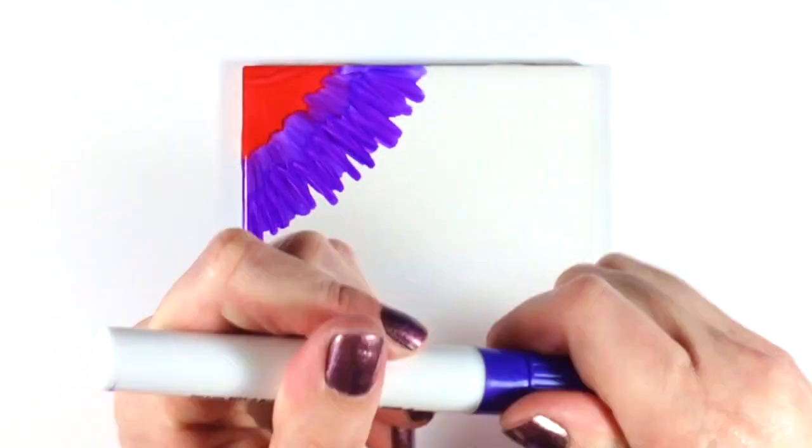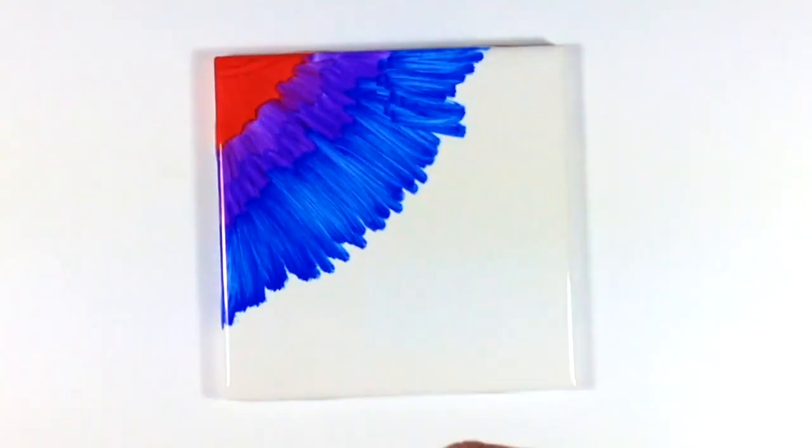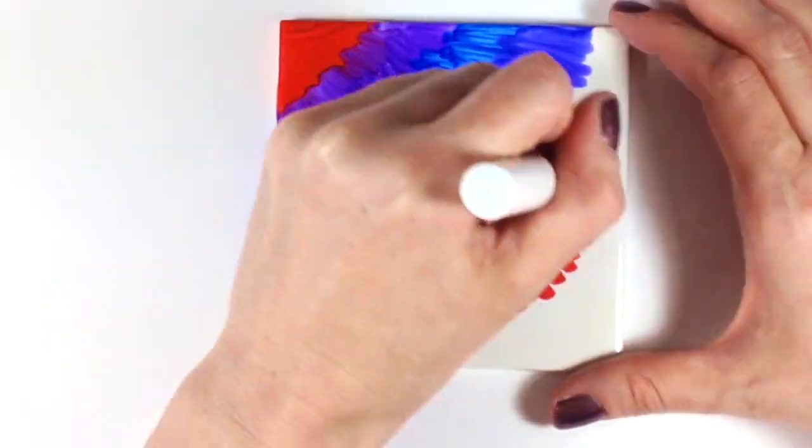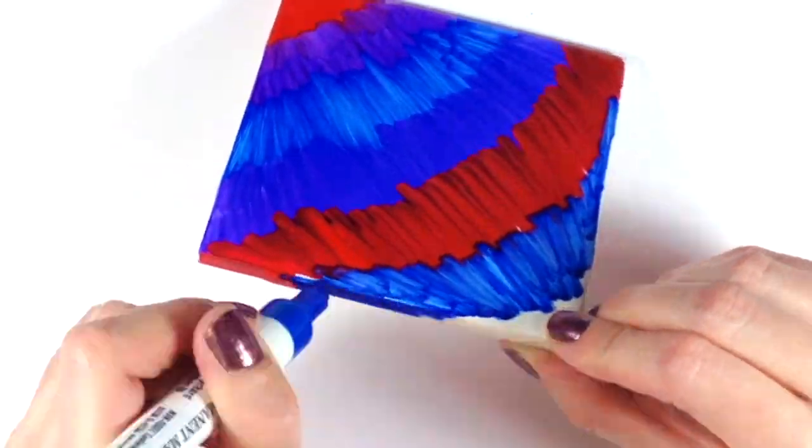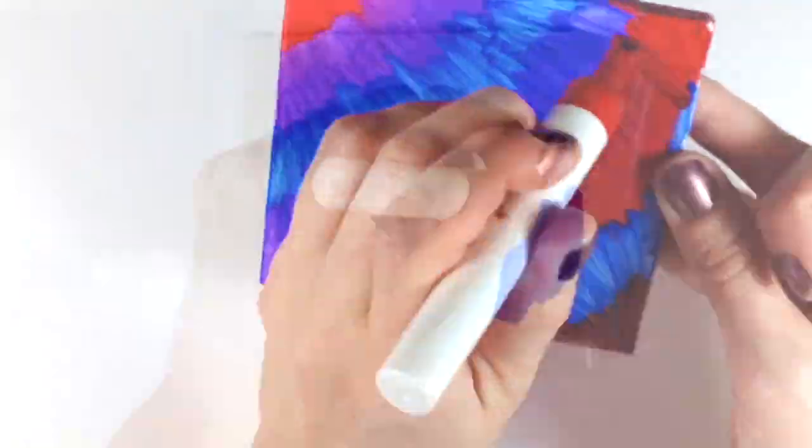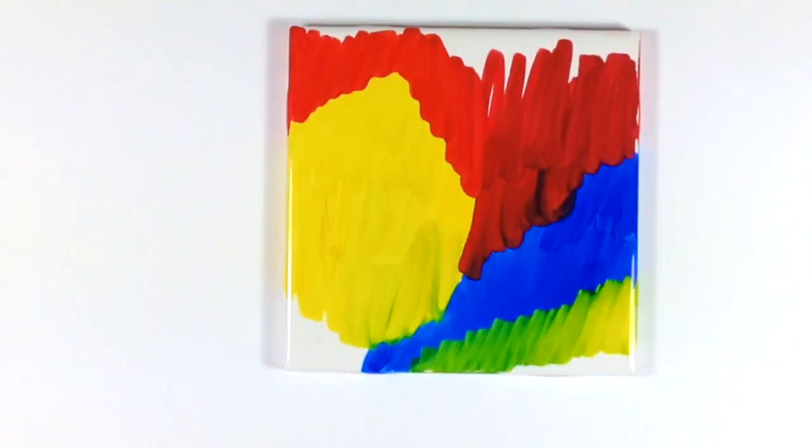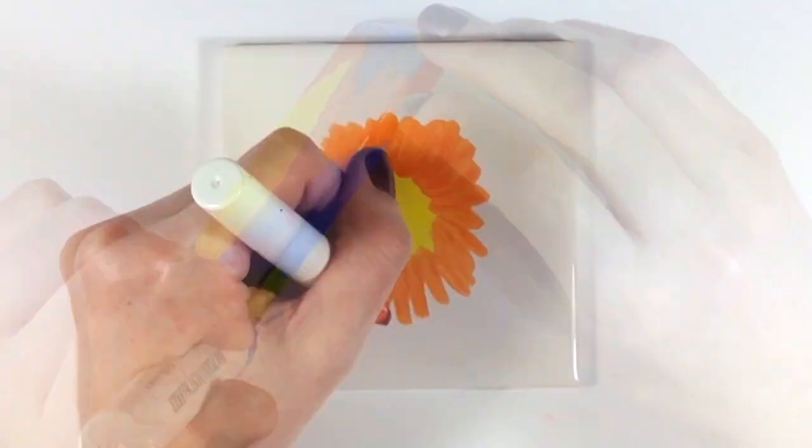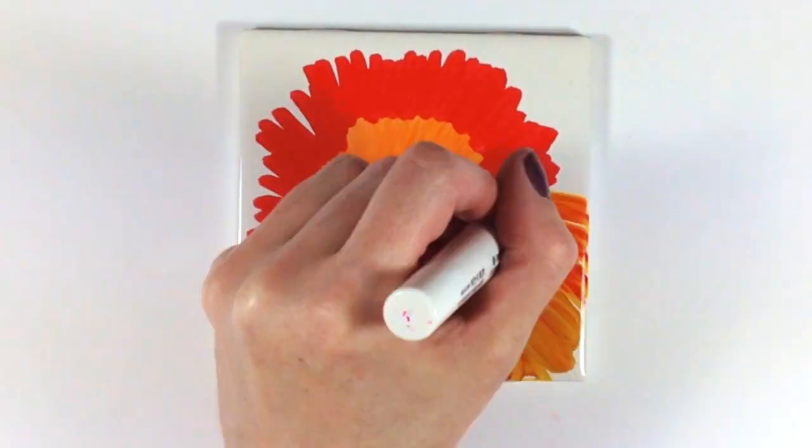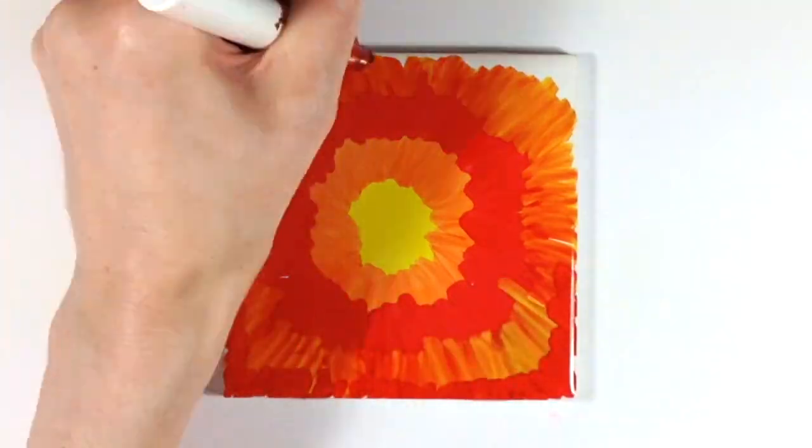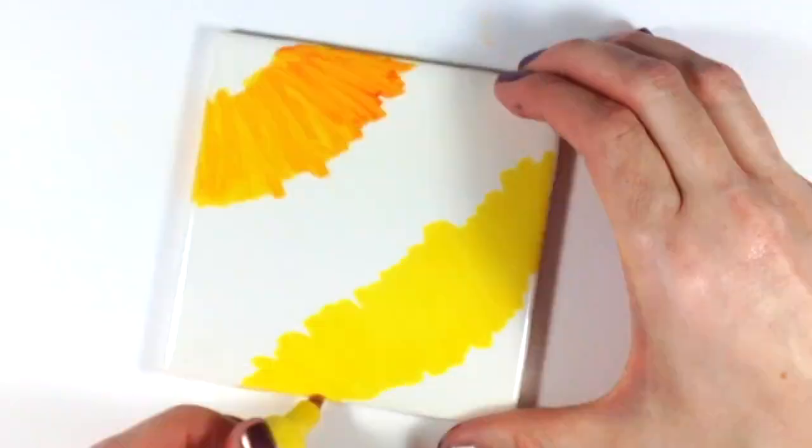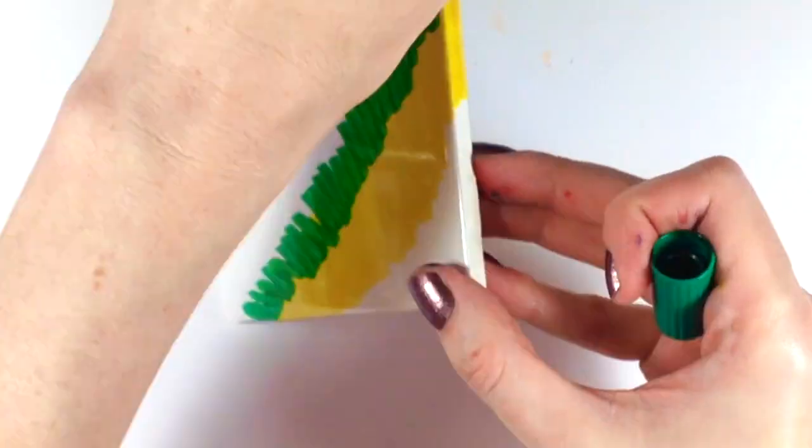Here I am coloring my entire tile with the permanent markers. I'm making sure to color the edges of my tile to give it a more finished look. I'm not making a complicated design because when I add the alcohol to the tile it will change it. I'm also using colors that I think will blend really well together.